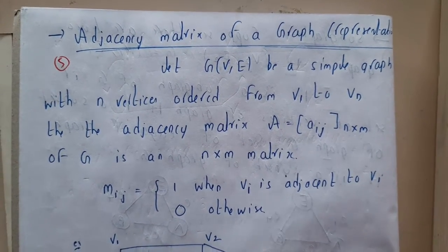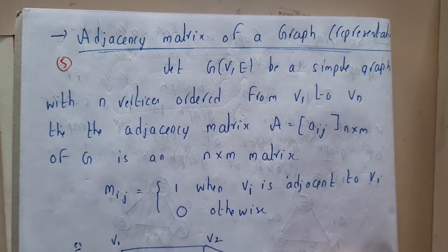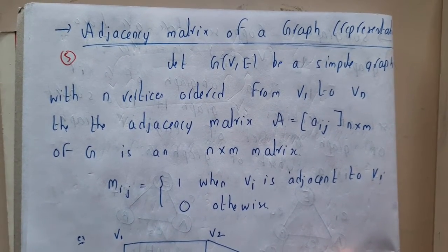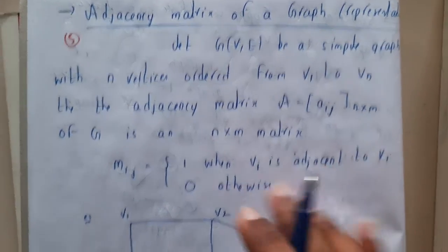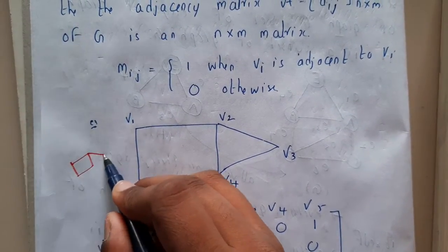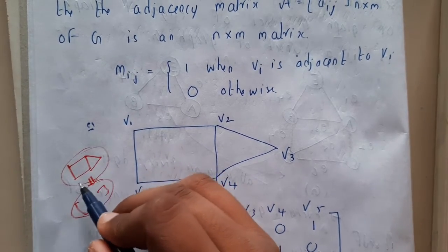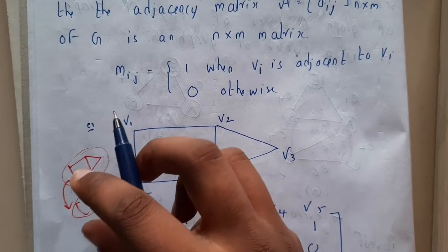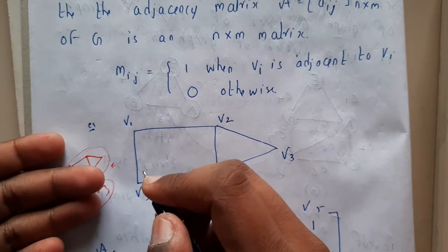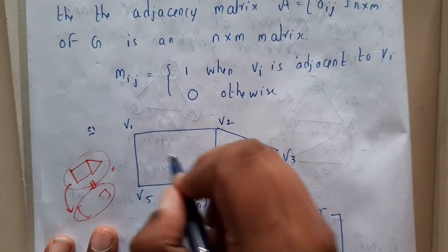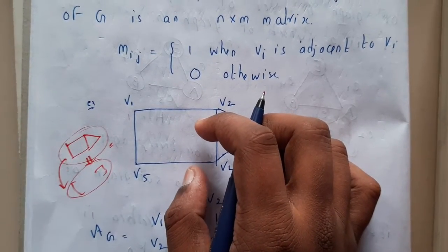Hello guys, we are back with our next lecture. In this lecture let us go through the adjacency matrix of a graph — how it is represented. This comes under the representation of a graph in terms of a matrix. Whenever you draw a particular graph and want to convert it into its matrix representation, that is what we will discuss. In programs you cannot draw a graph and give it as an input, so you need to give a matrix representation.